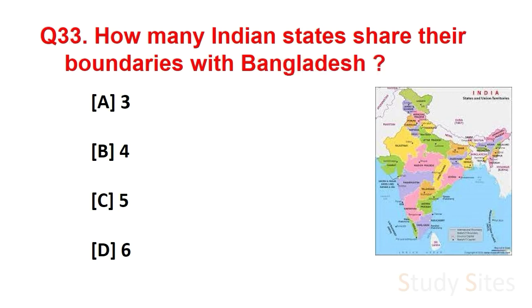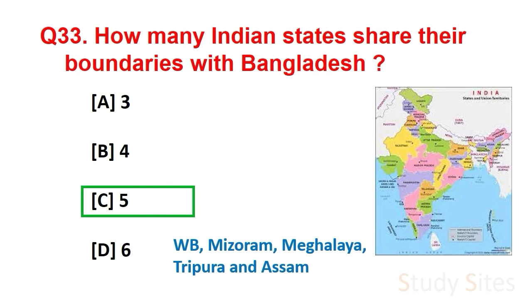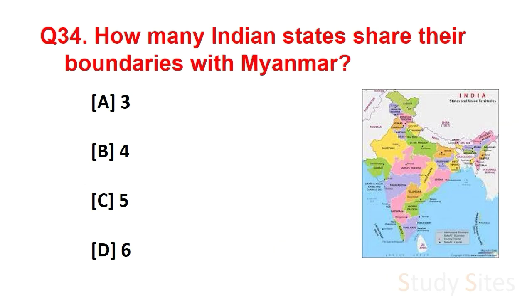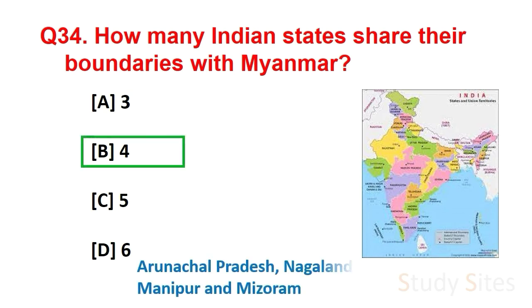Question number 33. How many Indian states share their boundaries with Bangladesh? Answer is 5. They are West Bengal, Mizoram, Meghalaya, Tripura and Assam. Question number 34. How many Indian states share their boundaries with Myanmar? Answer is 4: Arunachal Pradesh, Nagaland, Manipur and Mizoram.